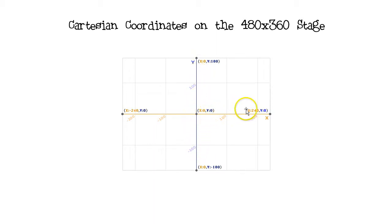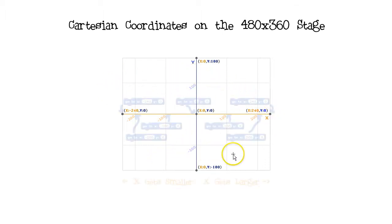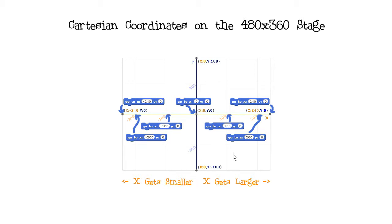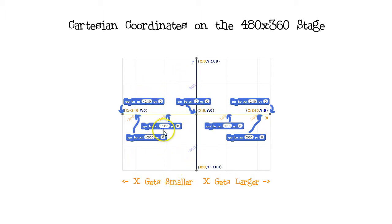Knowing both the x and y values gives a unique location anywhere on the stage. The x-value of zero is in the center. Positive x-values are on the right half, and negative x-values are on the left half. These GoTo blocks will place the sprite along the center line across the stage, because all the y-values are zero.